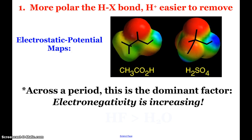And across a period, this is our dominant factor. Again, a little trend thing. As you go across, our electronegativity is increasing. So this is an example of why hydrofluoric acid is a stronger acid than water. The HF bond is more polar than the HO bond. So the hydrogen is easier to remove.